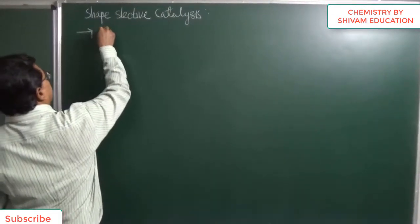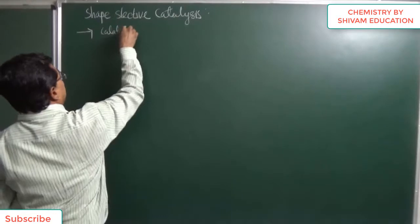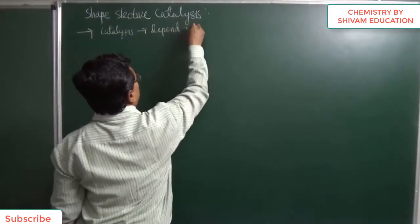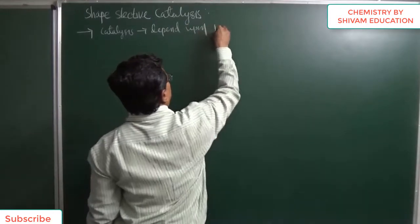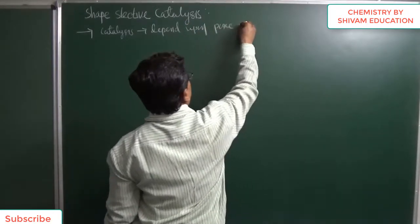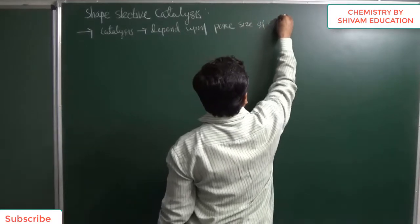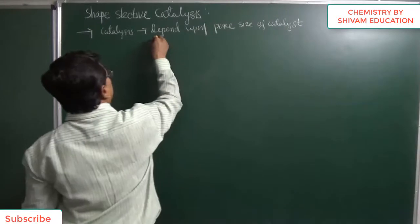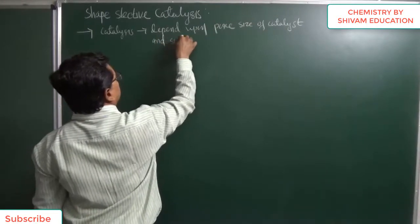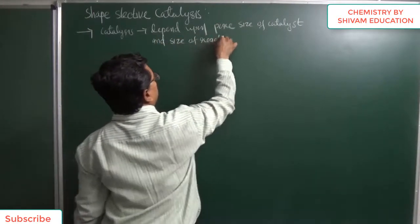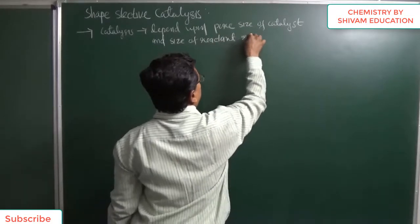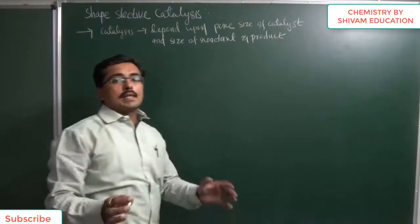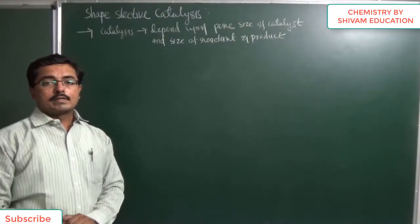To summarize: catalysis depends upon the pore size of the catalyst, and the size of reactant and product. This is known as shape selective catalysis.